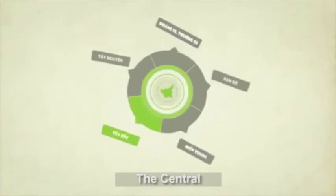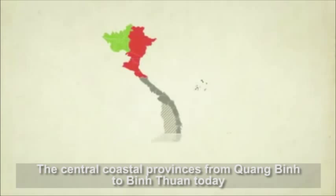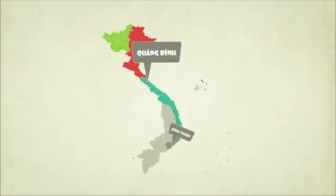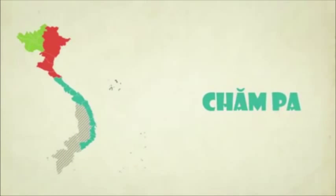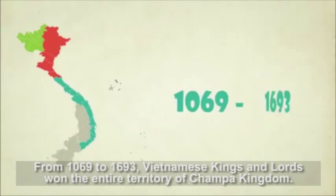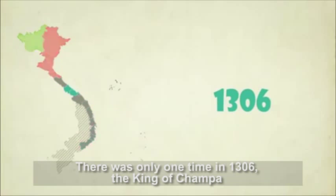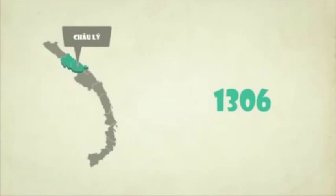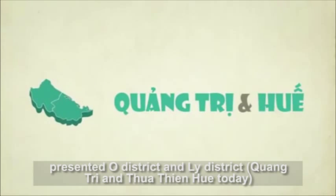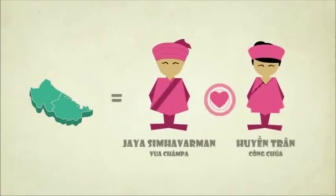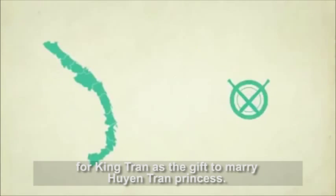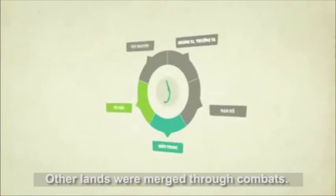The Central — the coastal provinces from Quang Binh to Binh Thuan today were formerly the land of the Champa Kingdom. From 1069 to 1693, Vietnamese kings and lords won the entire territory of the Champa Kingdom. There was only one time, in 1306, when the king of Champa presented O District and Ly District — Quang Tri and Thua Thien Hue today — as a gift to marry Princess Huyen Tran. Other lands were merged through combat.